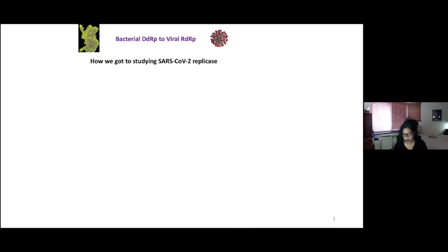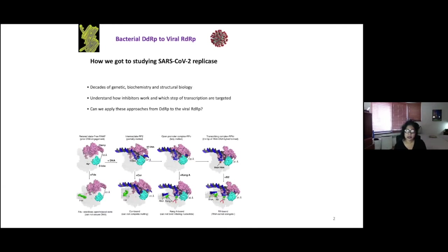We got to this because we know a lot from decades of biochemistry and structural biology how the DNA RNA polymerases work. We understand how the inhibitors work and which steps are targeted, and we wonder whether we can apply some of these approaches towards understanding SARS-CoV-2 replication transcription.